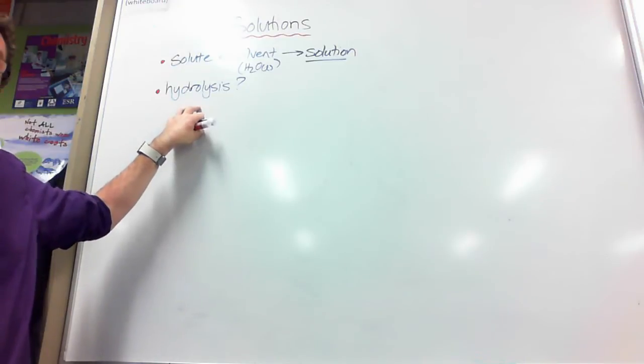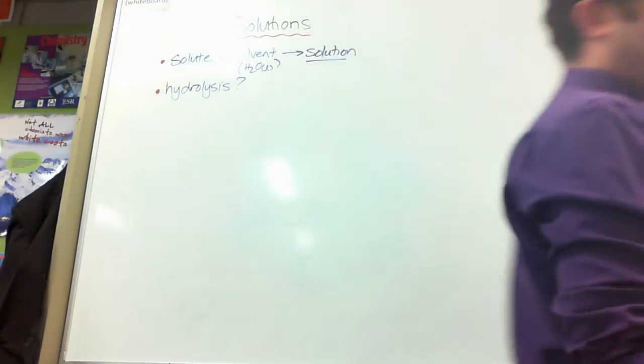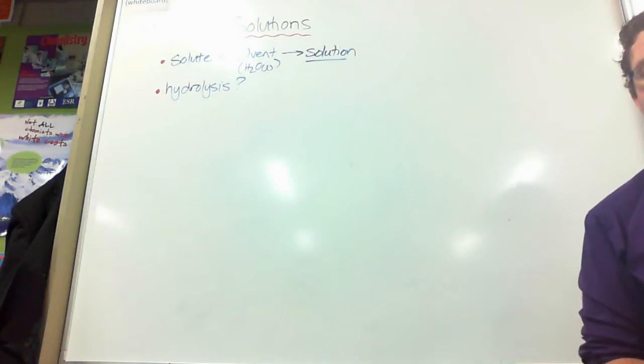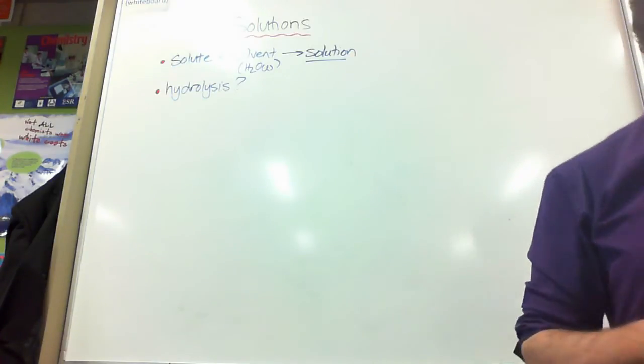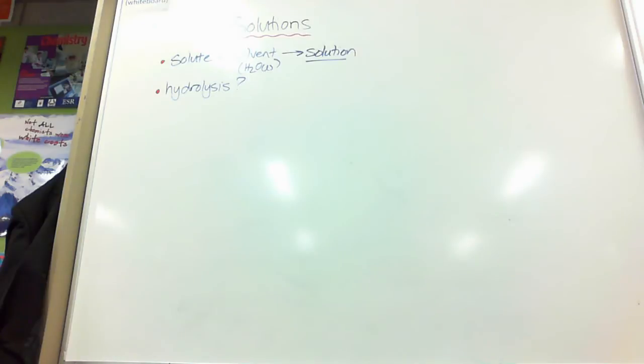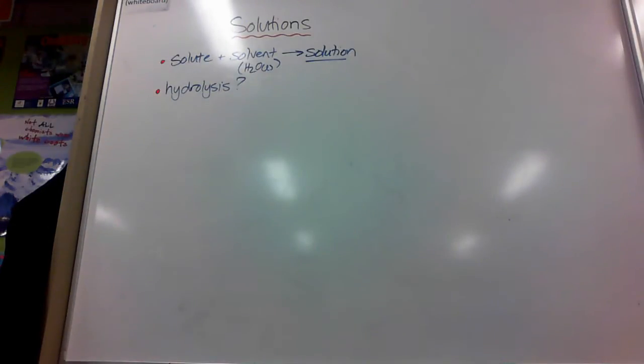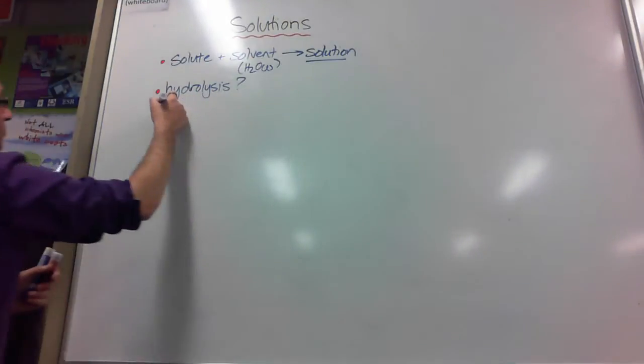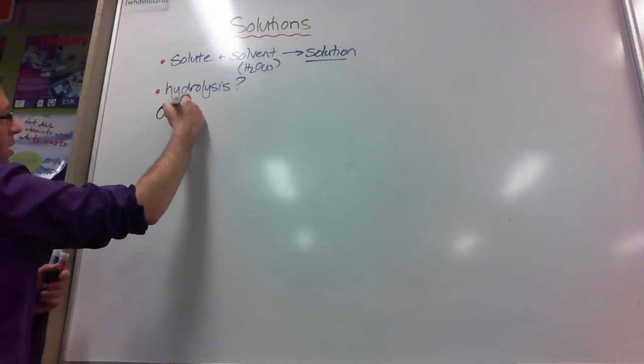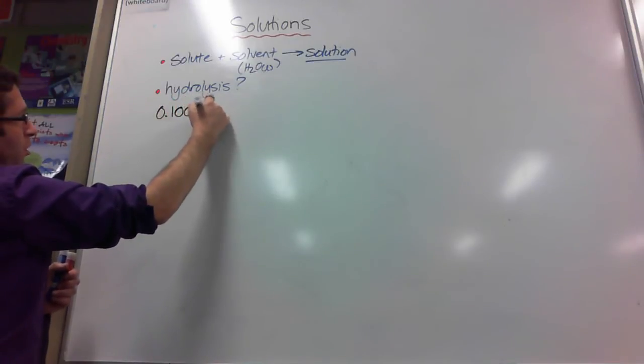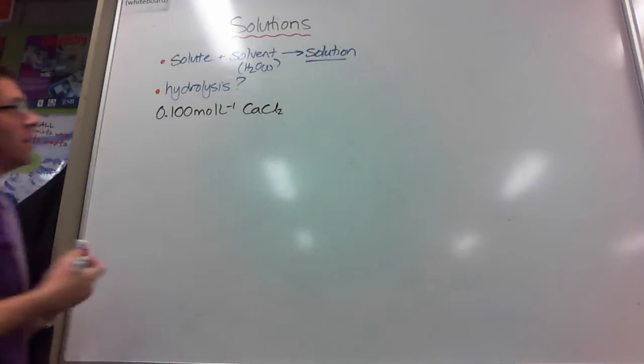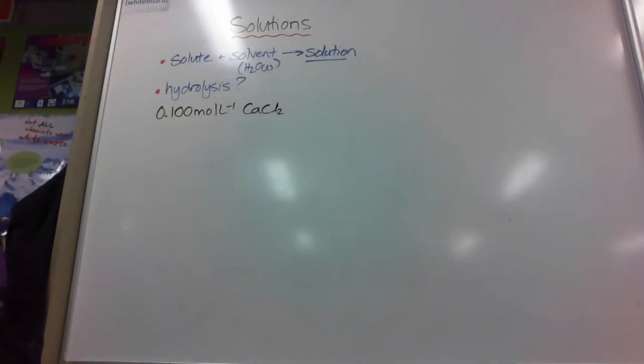I'm going to go through a couple of examples, some from our book Continuing Chemistry on page 186, and some that I've just jotted down. The first one was 0.1 mole per litre calcium chloride solution. I'm going to put some more significant figures there.